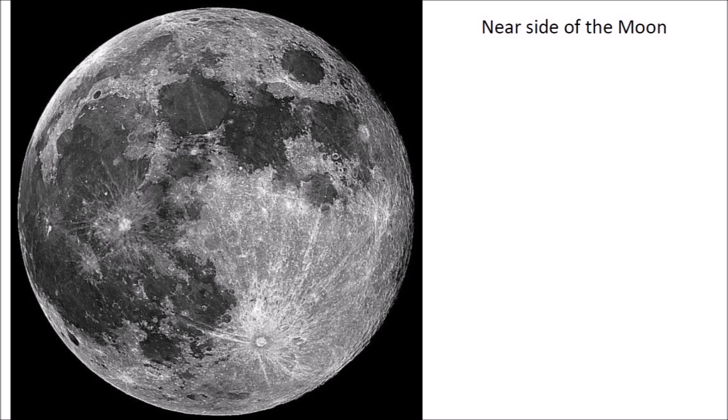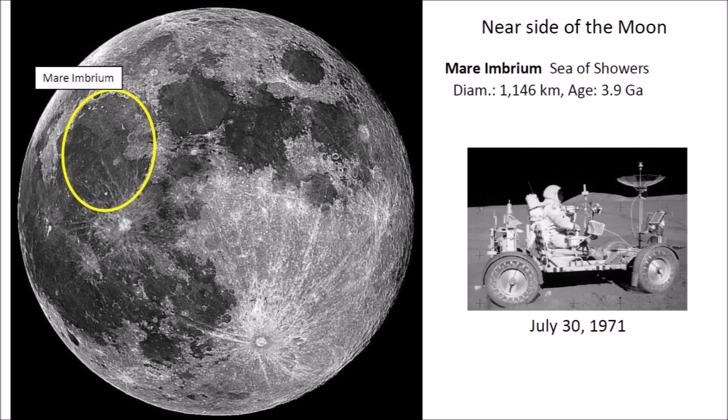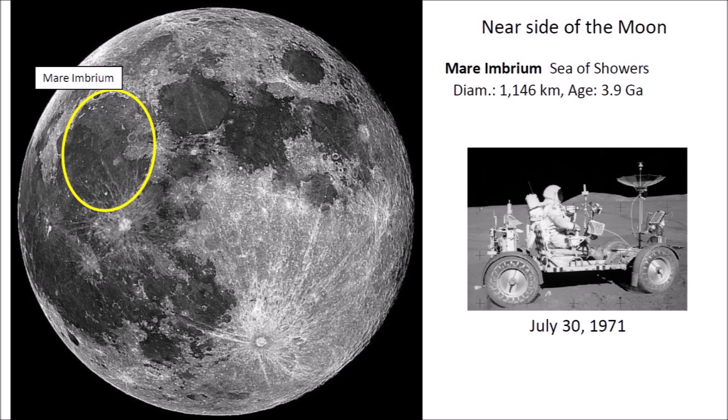The dark areas of the Moon were thought to be seas by early astronomers, and they named them accordingly. Mare Imbrium, the Sea of Showers, has a diameter of 1,146 kilometers and an age of 3,900 million years. Apollo 15 landed on this site on July 30, 1971, and was the first mission to use a lunar rover.